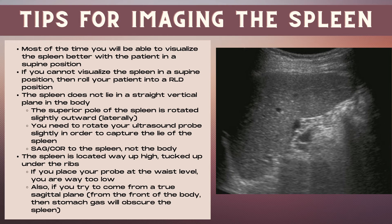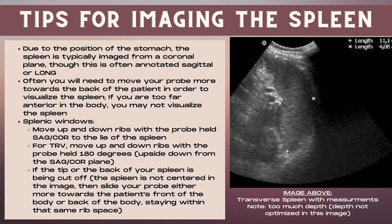The spleen is located way up high, tucked up under the ribs — if you place your probe at waist level, you are too low. If you try to come from a true sagittal plane from the front of the body, stomach gas will obscure the spleen in most cases. Due to the position of the stomach, the spleen is typically imaged from a coronal plane, though most commonly still annotated as sagittal or long on the images. Often you'll need to move your probe more towards the back of the patient — if you're too far anterior, you may not visualize the spleen.